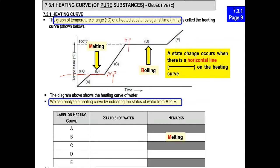That will be what's happening at part B — that is melting. And for part D, that will be boiling.